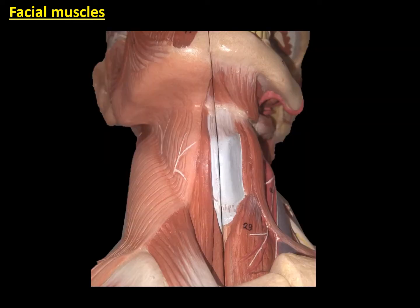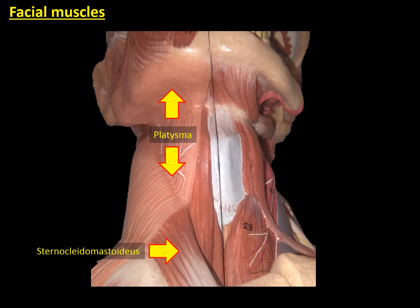At the inferior part of the model, we can observe the muscle called platysma, which is going from the inferior part of the mandible down to the chest, and which is partially covering the sternocleidomastoid muscle.